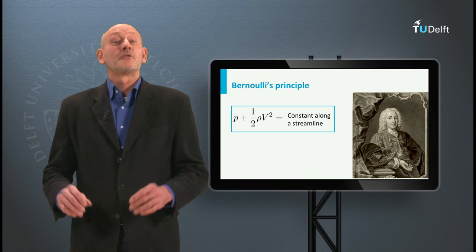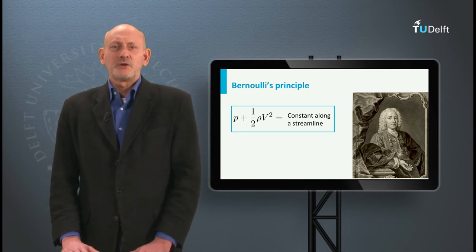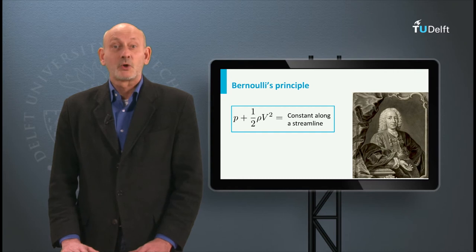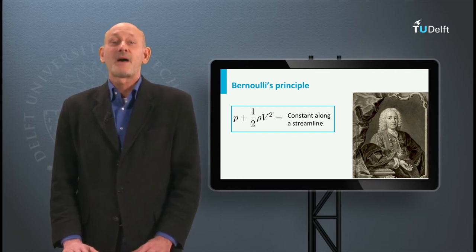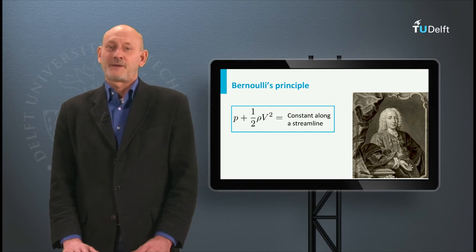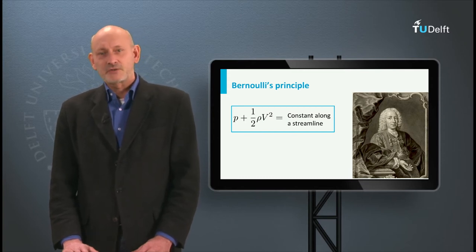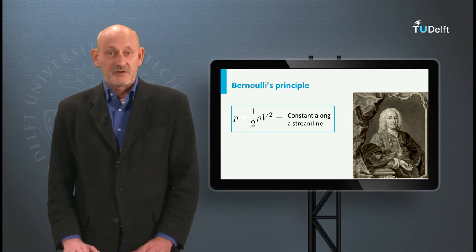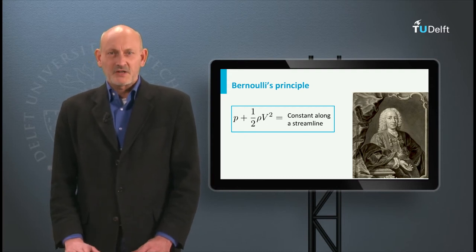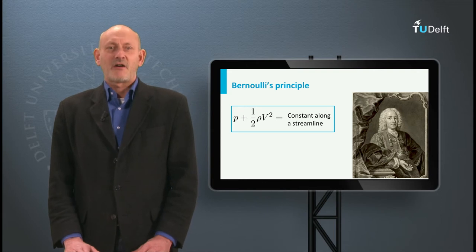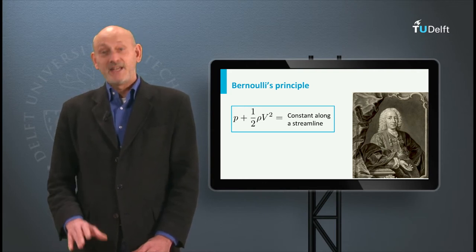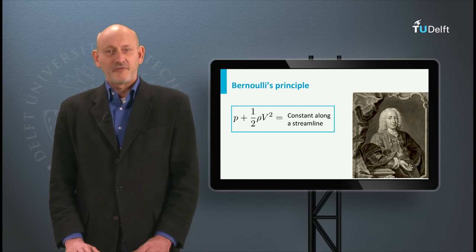Who actually was Daniel Bernoulli? He was born in January 1700 in Groningen in the Netherlands. His father Johann was professor in mathematics at the University of Groningen. The family came from Basel in Switzerland, and after ten years abroad they returned when Daniel was 5 years old. His father's brother Jacob held a chair of mathematics at Basel University, and when he died, Johann was offered to fill the vacancy.